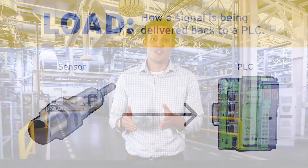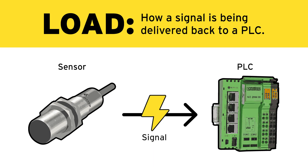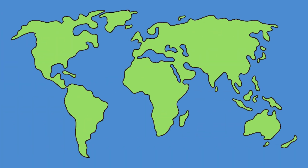Breaking down the sensor outputs, they're always tied to what is called the load, and that is simply how that signal is being delivered back to your PLC. Here in the U.S. and most of Europe we typically see PNP, and then NPN is typically seen in most countries out in Asia.